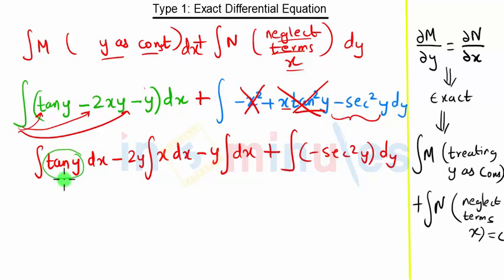treating y as constant, so tan y is constant, so we can take this tan y outside the integration. Integration of dx is nothing but simply x minus 2y. Similarly, y is constant and 2 is also constant, so we can take 2y outside the integration. Integration of x is x square upon 2 minus y. Similarly,